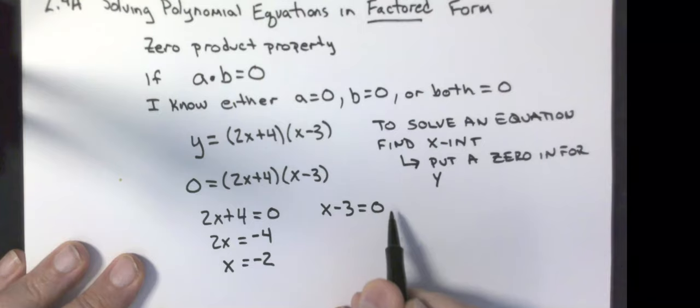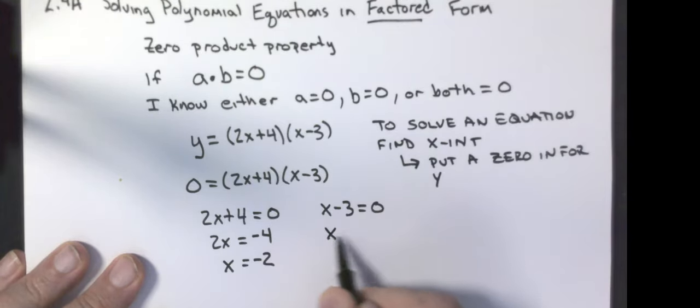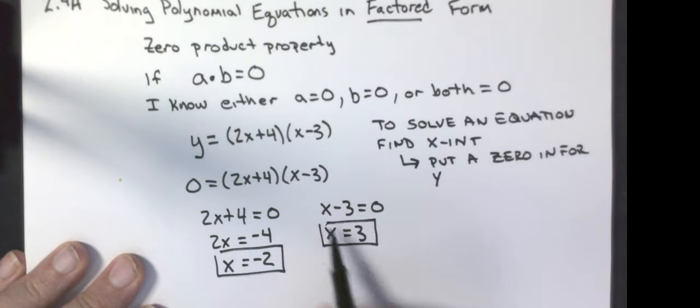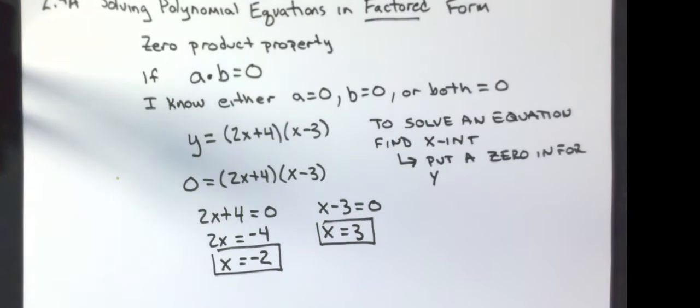On this one, I'm just going to add the 3 to both sides. I get x equals 3. I have two answers: x equals negative 2 is one of the answers, x equals 3 is another one of those answers.